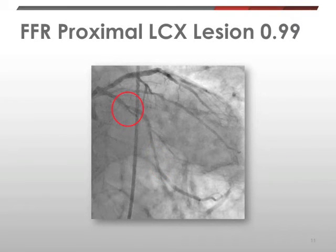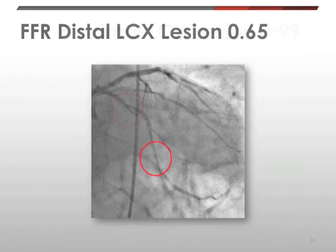We then measured FFR. The FFR proximal to the left circumflex artery is 0.99, and the FFR distal to the left circumflex artery is 0.65. This confirms using FFR that this is a significant lesion as well.